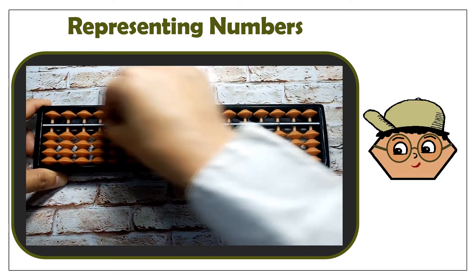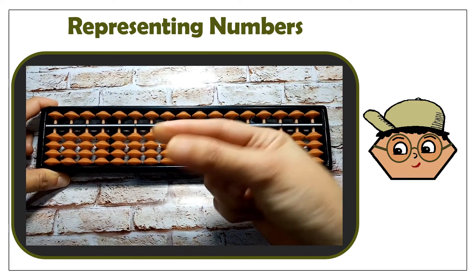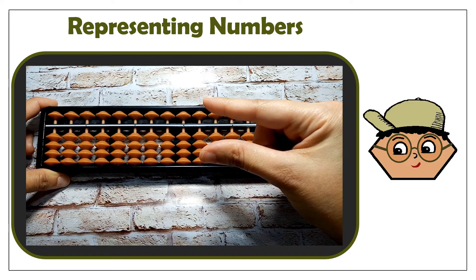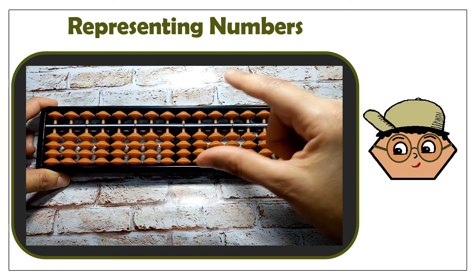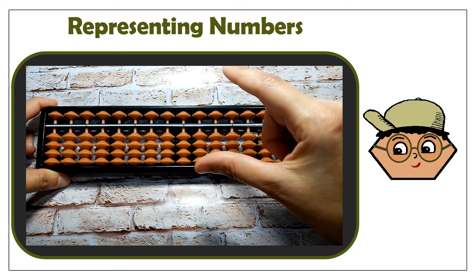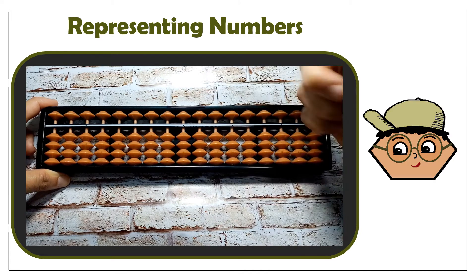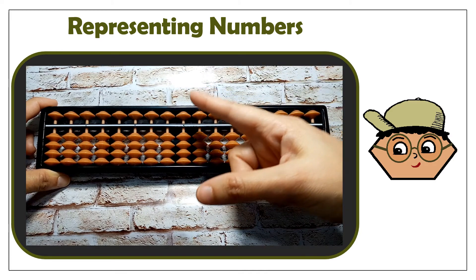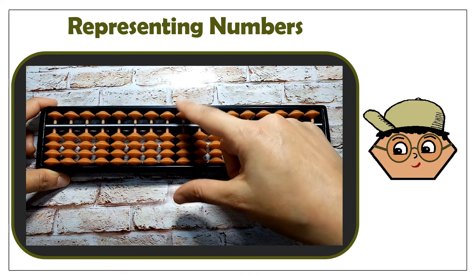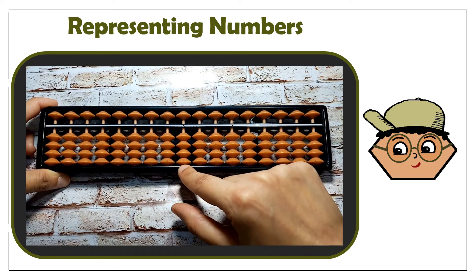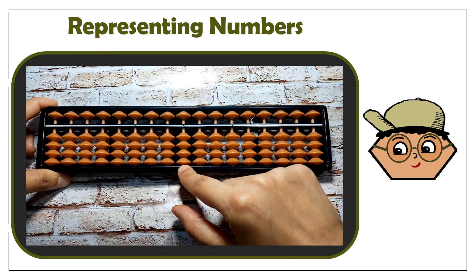You will reset the Abacus using your thumb and index fingers. You will use the thumb to count the lower beads, and the index finger for the upper beads. The unit's rod is the one in the middle — so this is how you count.